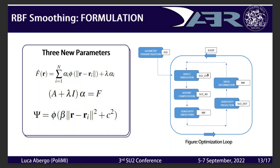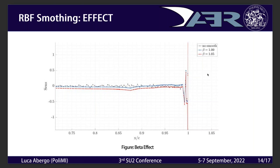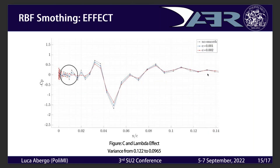The first parameter is lambda, which modifies the diagonal of the linear system where you compute the weights. The other two parameters are beta and c. Beta must be higher than one; its effect is to lower the sensitivity value where it is already low, focusing the optimization on parts of the body where the sensitivity magnitude is high. The parameter c has a physical dimension, must be higher than zero, and tends to be lower than the minimum distance between two surface nodes; it reduces variance where there are high oscillations while maintaining the average value.